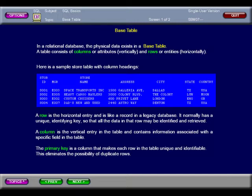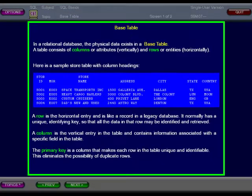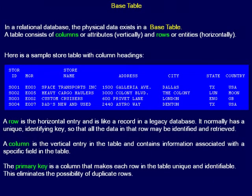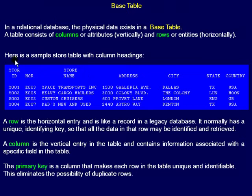Remember that in a relational database, the physical data is stored in tables that are defined in the database, and these tables are called base tables. When data is retrieved from one or more base tables, the result is returned as a temporary result table, and goes away when you are through using the data. A row is the single line of horizontal data and is identified by matching data values. A column is the single vertical pillar of data and is identified by the column name. Each base table has a unique table name. Data is found by specifying table name, column name, and matching data values. The primary key consists of column data that makes each row unique and identifiable.